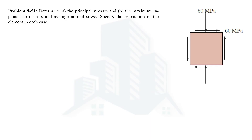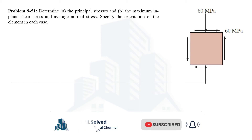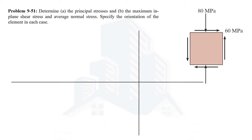We can determine the principal stresses and also the maximum in-plane shear stress using the formulas derived in previous videos, or we can determine these stresses using the Mohr circle as well. In this video I am going to solve this problem using the Mohr circle. In the Mohr circle, the x-axis represents the normal stress and the y-axis represents the shear stress. We will be drawing a grid for better understanding of the circle.